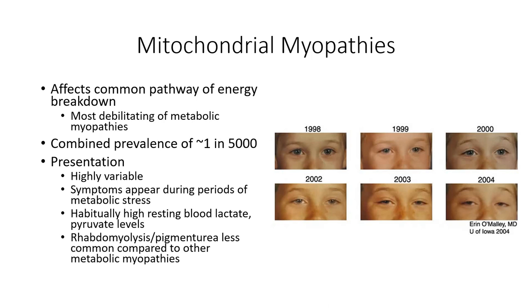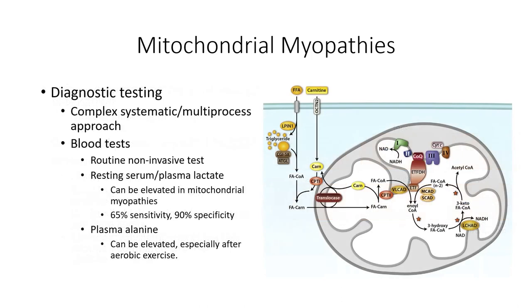The one finding that is not seen as commonly in mitochondrial myopathies is rhabdomyolysis. Making diagnoses in mitochondrial myopathies is a complex undertaking that requires a number of steps and tests. Often, a metabolic myopathy — but not necessarily a mitochondrial myopathy — is suspected and a forearm exercise test is requested. In contrast to a glycogen storage disease, an elevated blood lactate at rest is a strong indicator of a mitochondrial myopathy. This finding may only occur in 35% of those with mitochondrial myopathy, but the test is highly specific with only a 10% false positive rate.